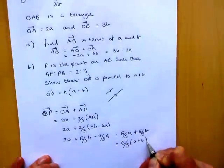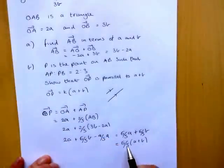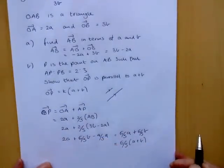So this is 6 fifths A plus 6 fifths B. So you write 6 fifths as your common factor. And so you are now able to show quite clearly that OP is a multiple of AB. It is 6 fifths AB. And this proves that it's parallel.